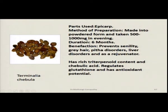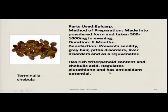Terminalia chebula — the part used is the epicarp. It is made into a powder, and 500 to 1000 milligrams is taken every evening for a period of 6 months. It prevents senility and grey hair, the pitta disorders — meaning liver disorders — are cured, and it acts as a general rejuvenator. The triterpenoid content of this epicarp and the chebulin content present act as the medicinal components. Along with this, it regulates glutathione and has strong antioxidant potential. These are only some of the herbs commonly used in Siddha medications.